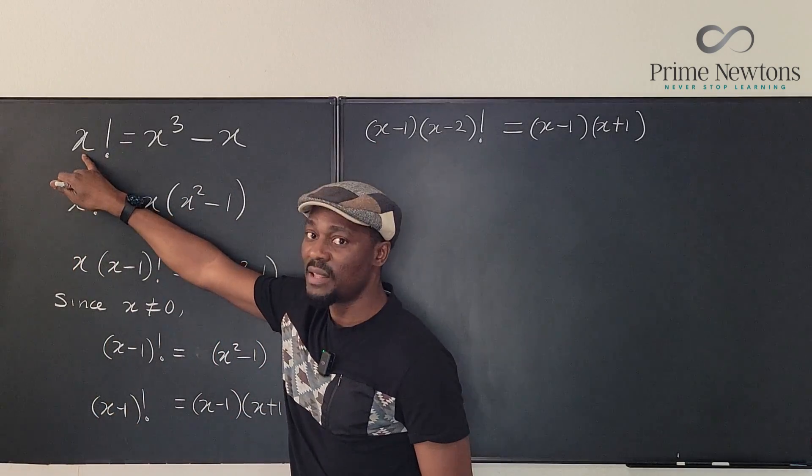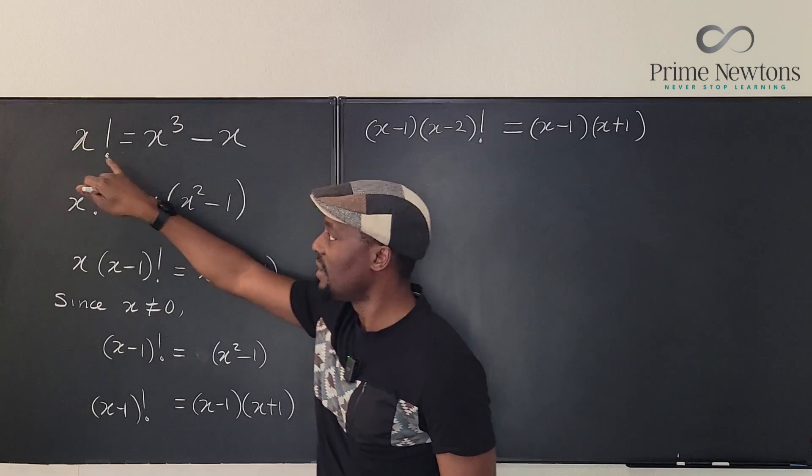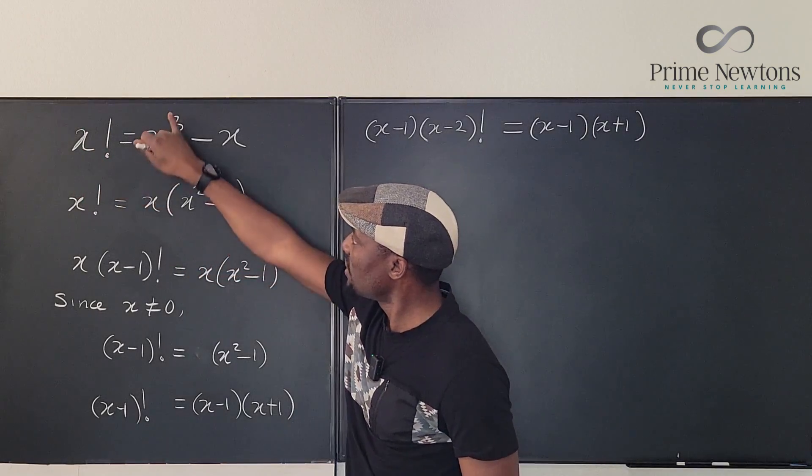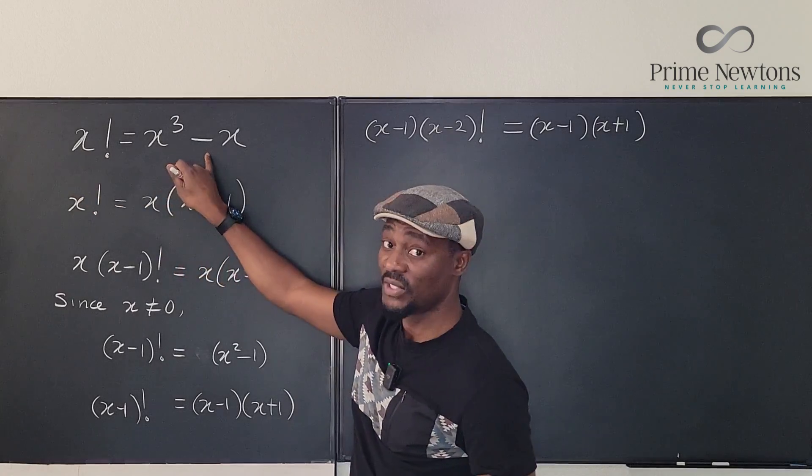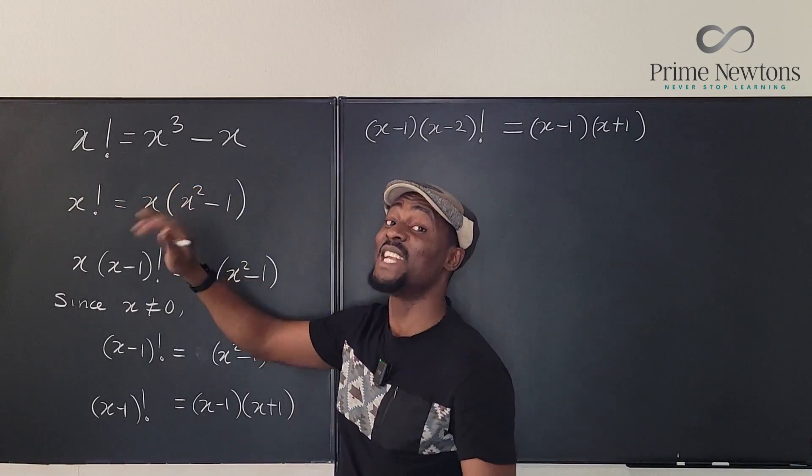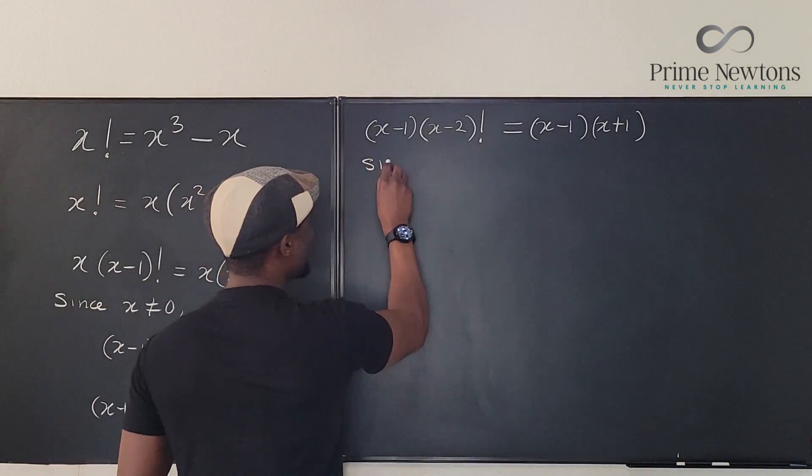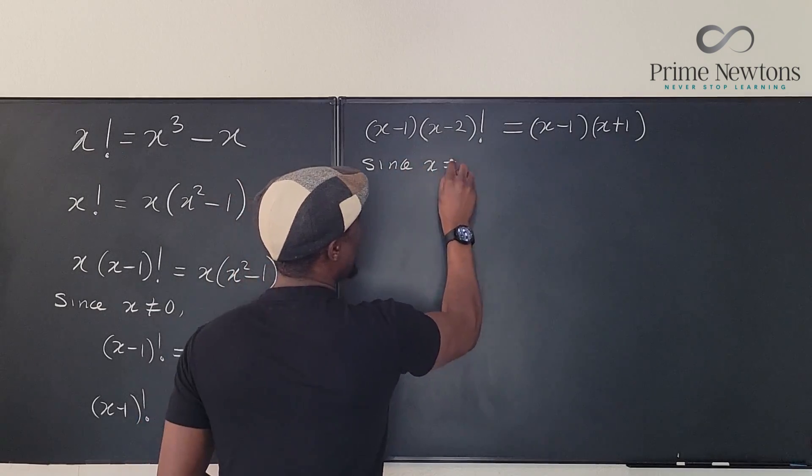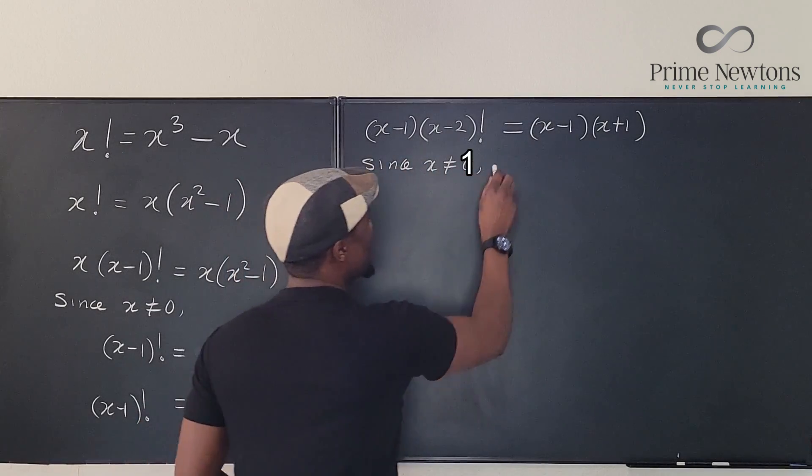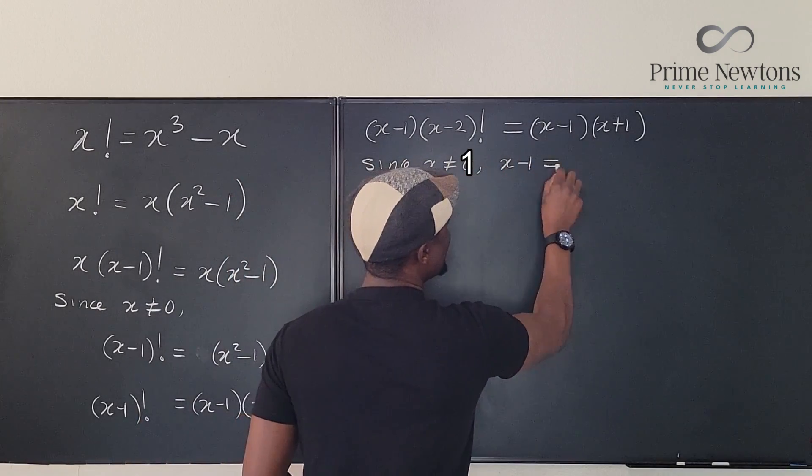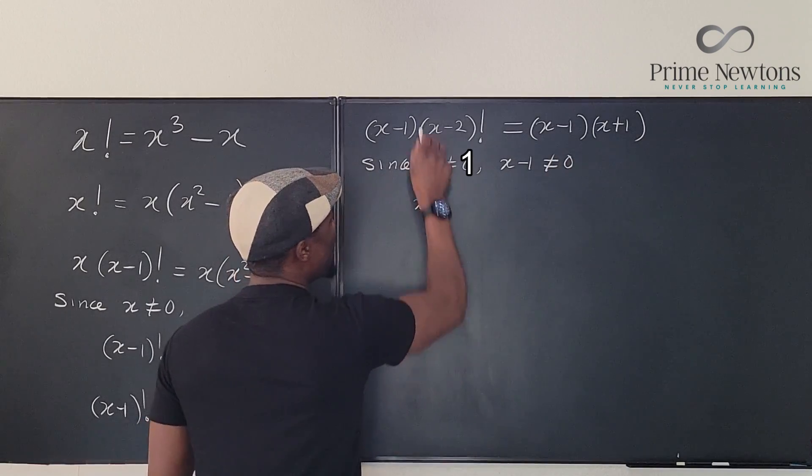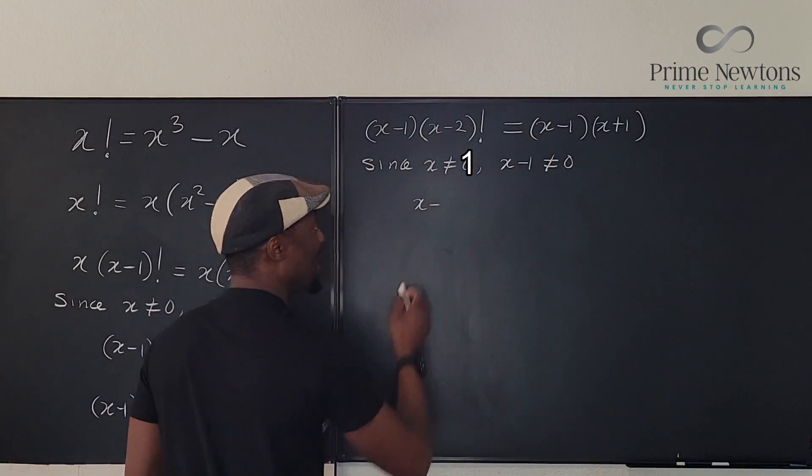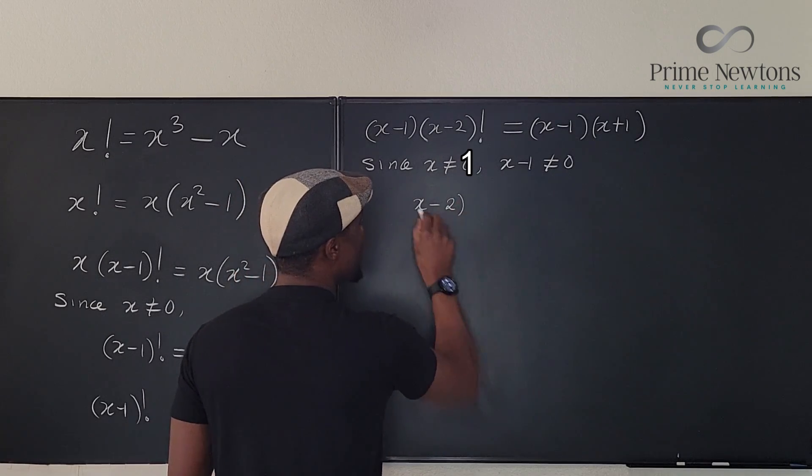If x is 1, then 1 factorial is 1. And this is going to be 1 cubed minus 1, which is 0. So 1 is equal to 0 is not a true statement, which means x cannot be 1. So we do the same thing. Since x is not equal to 1, x minus 1 is not equal to 0. So we can say that we can divide both sides by x minus 1 and have x minus 2 factorial is equal to, what would this be? x plus 1.